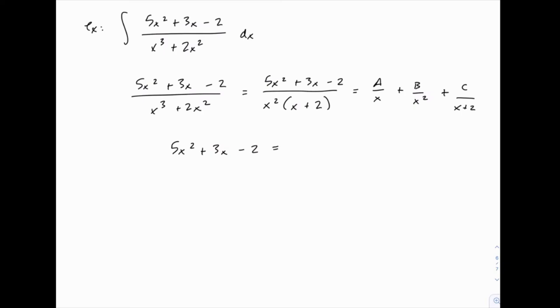On the right side, the first term will cancel an x, so we'll have A × x × (x + 2). The second term will cancel x², and the third term will cancel x + 2.